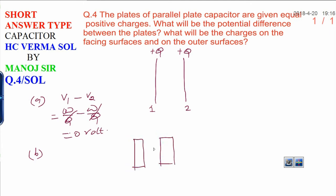Here we have two plates, one having charge Q and another also having charge Q. On the outer plates, the charge will be (Q + Q)/2. Here also (Q + Q)/2, according to conservation of charge.